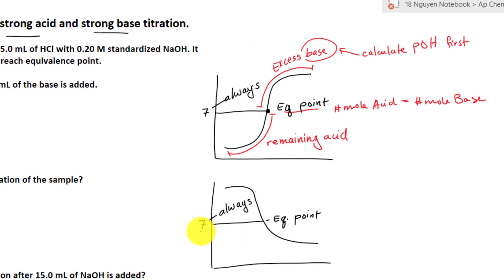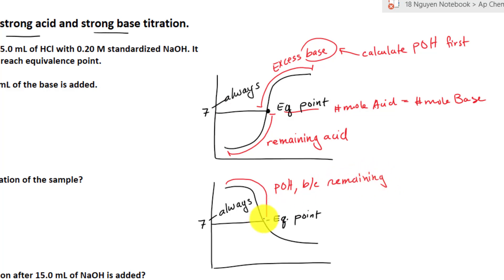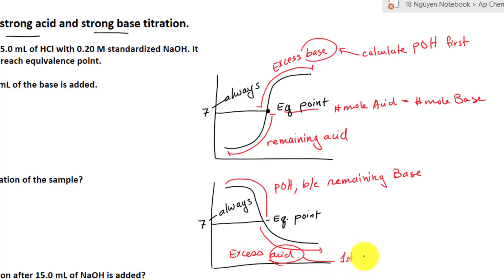The same thing on the bottom here, but we take the opposite approach where we are starting from a high pH. What determines here is you have to find the pOH, because it is determined by the remaining base — whatever base is left over not neutralized by the acid. And then after the equivalent point, all the base has been neutralized by the acid, so this will be the excess acid. Because it is an acid, you have to first calculate your pH to find pOH.